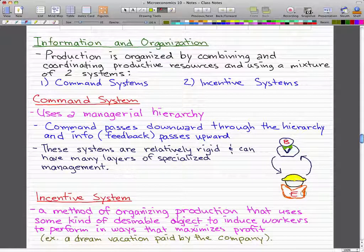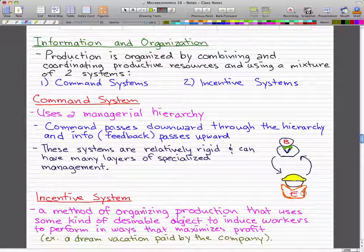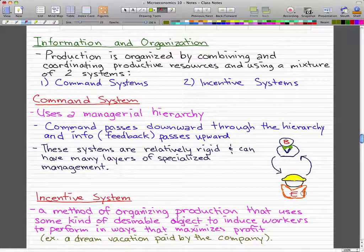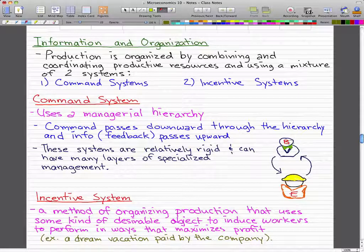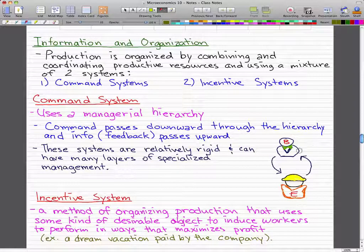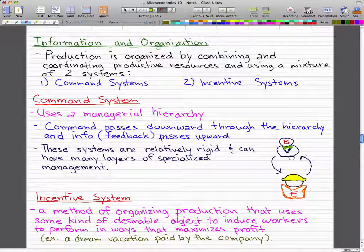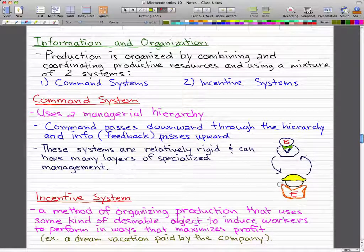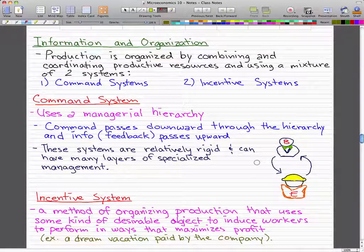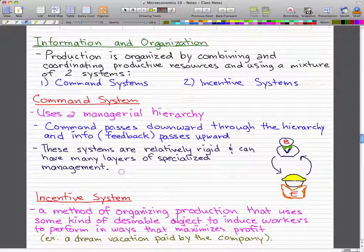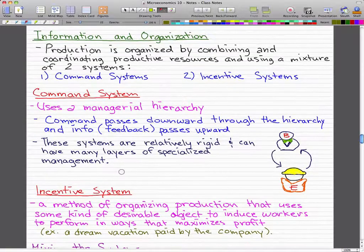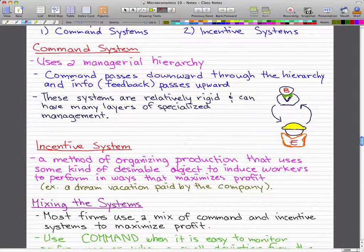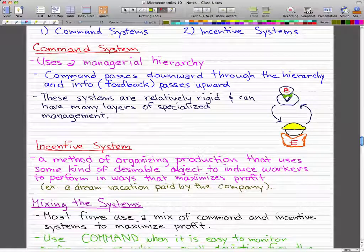The command is passed downward through the hierarchy and info feedback is passed upward. When the McDonald's cashier is having a problem with a customer then he'd probably refer back to the supervisor, let the supervisor handle this. And when the supervisor needs something to be done then he will talk to the employee and the employee will probably do it or get fired. So these systems are relatively rigid and can have many layers of specialized management.